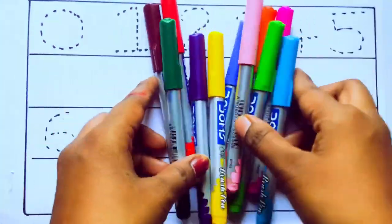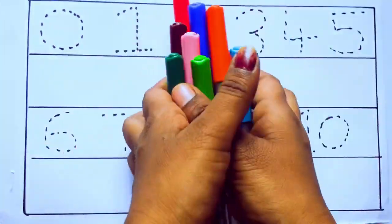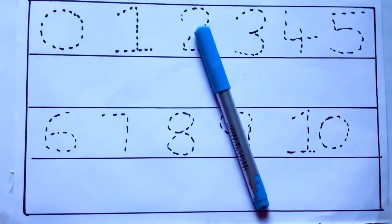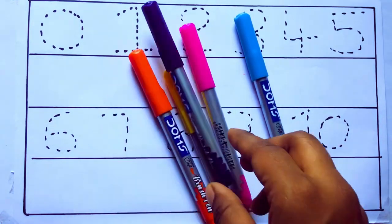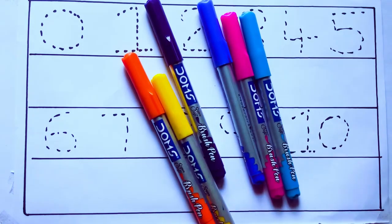Let's learn some colors. These are all the color pencils. Let's learn the names: sky blue color, pink color, yellow color, orange color, violet color, blue color